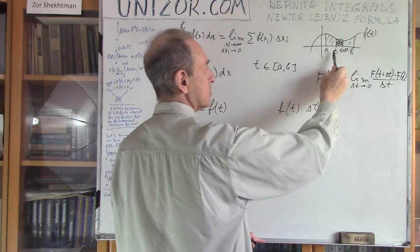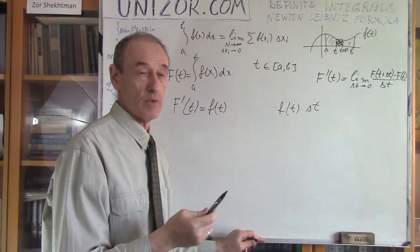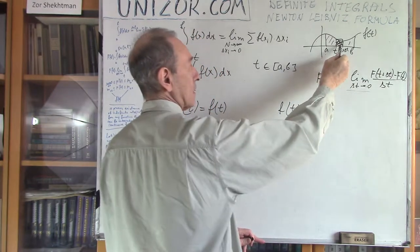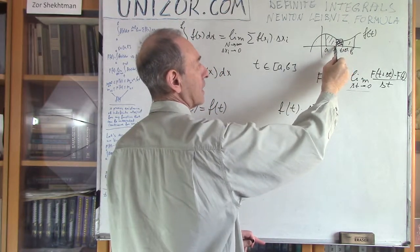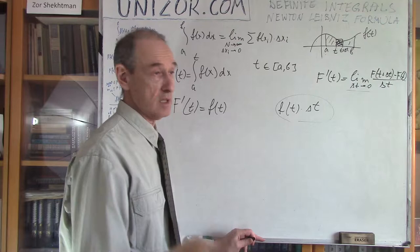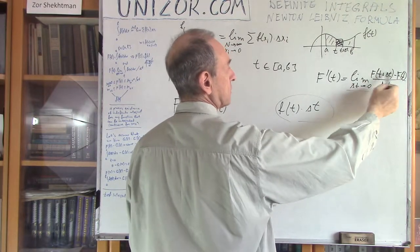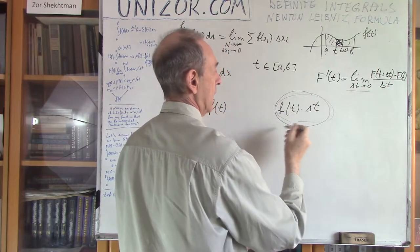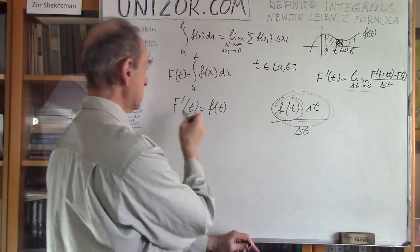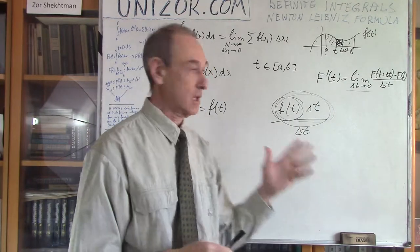The function is changing from t to t+Δt, but if the function is continuous, the change is very small. As Δt shrinks, the difference between the area under the curve and the area of this rectangle is really minuscule. So when you do this difference and divide by Δt, you get only the function f(t). This is essentially the geometrical sense of this formula.